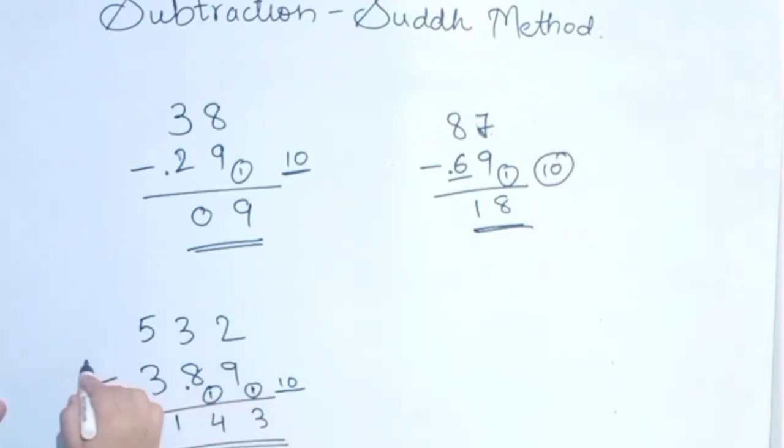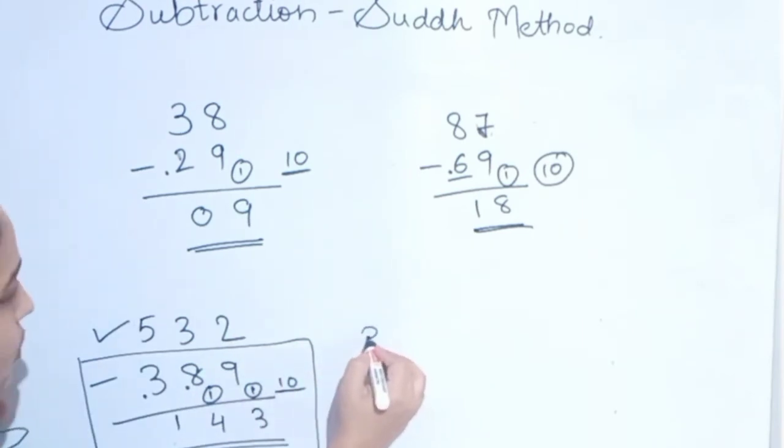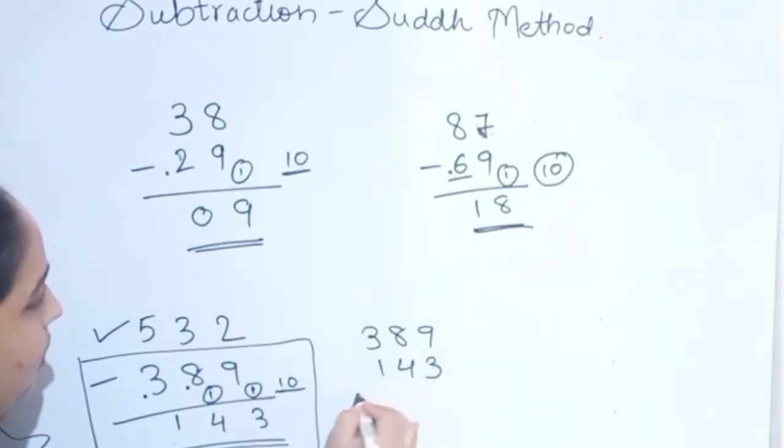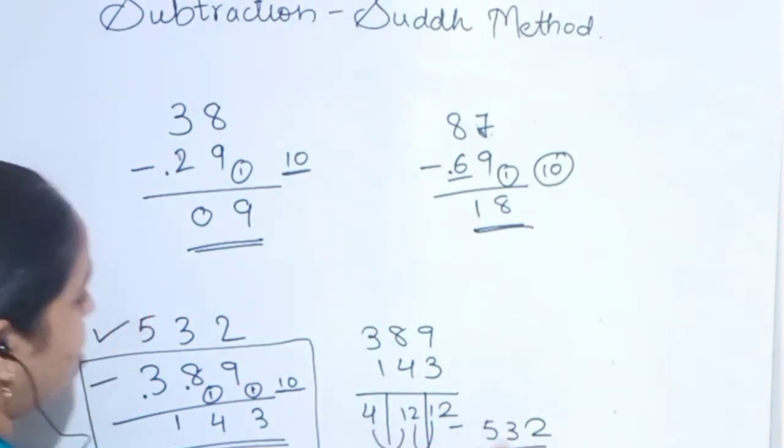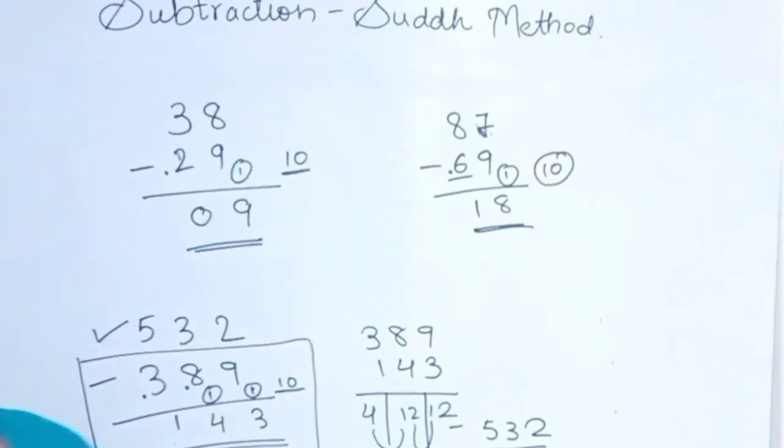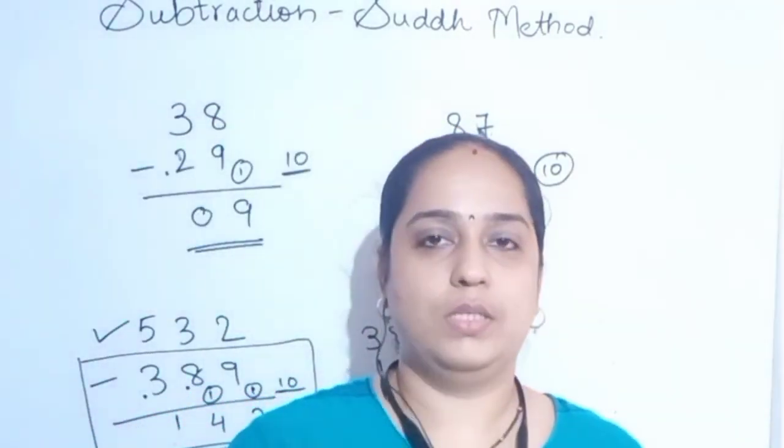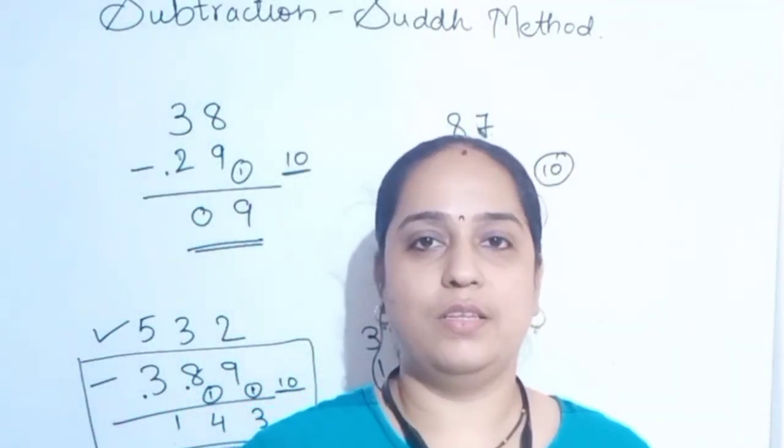How we will calculate? We will add these 2 numbers and we should get this number. So 389 plus 143: 9 plus 3 is 12, 8 plus 4 is 12, again 3 plus 4 is, 3 plus 1 is 4, so 2, 3, 5. See, we got the answer. This is how Shuddha method works. I hope you understand the topic.